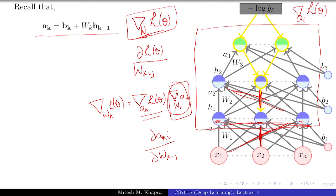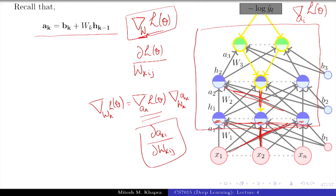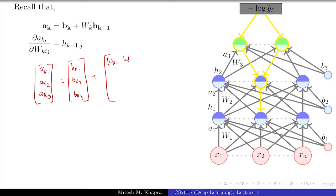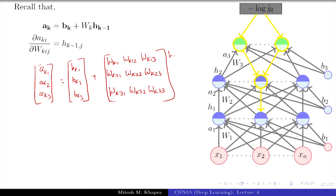One element of this tensor is the partial derivative of a_{k,i} with respect to w_{k,i,j}. So the chain rule for one element looks like: the partial of the loss with respect to a_{k,i} times the partial of a_{k,i} with respect to w_{k,i,j}. Now, let us take a simple example with W_k in R^{3×3}.